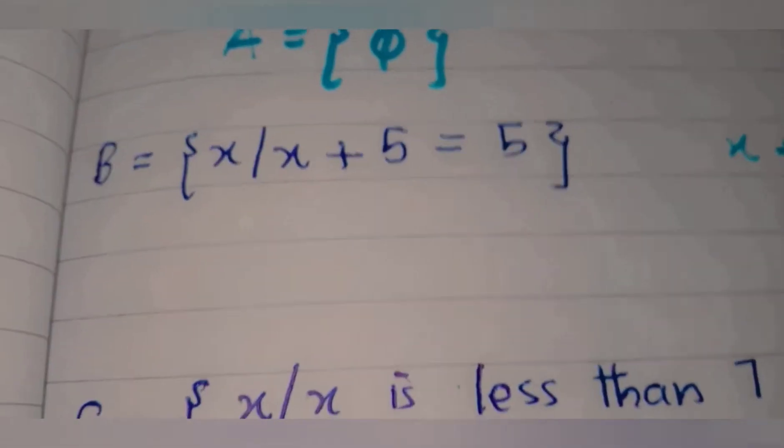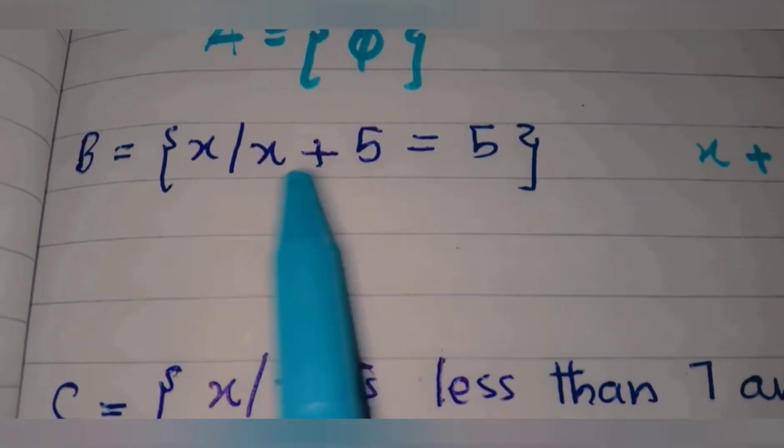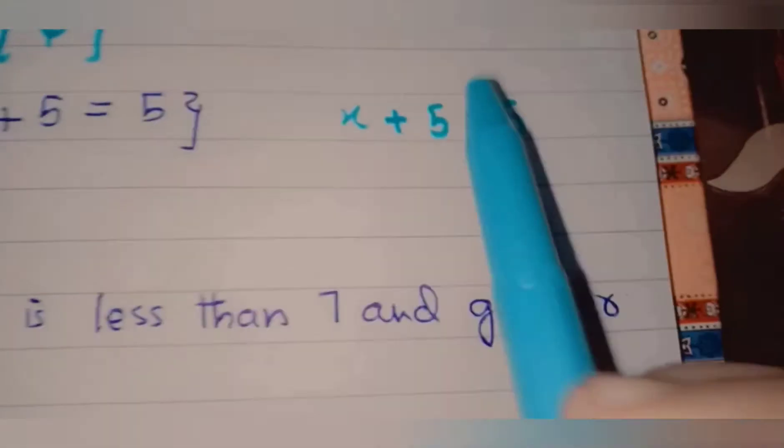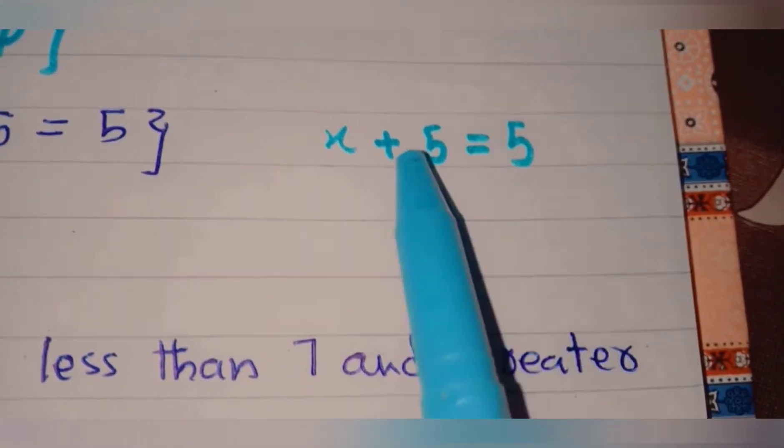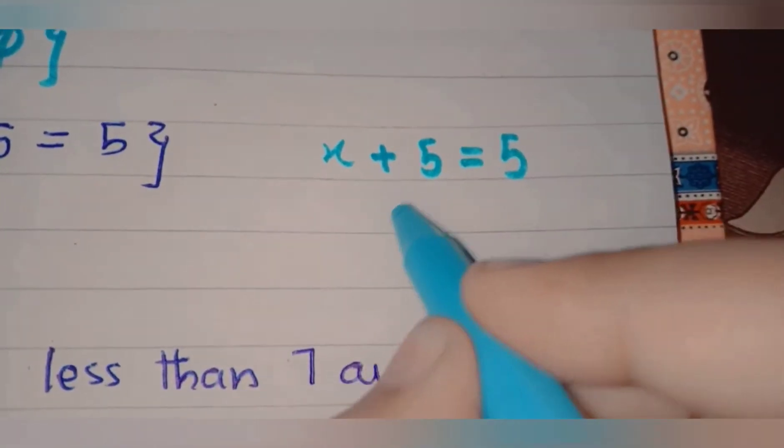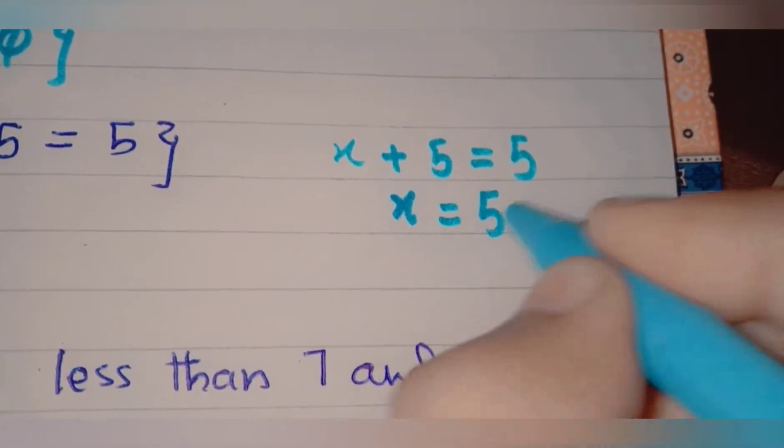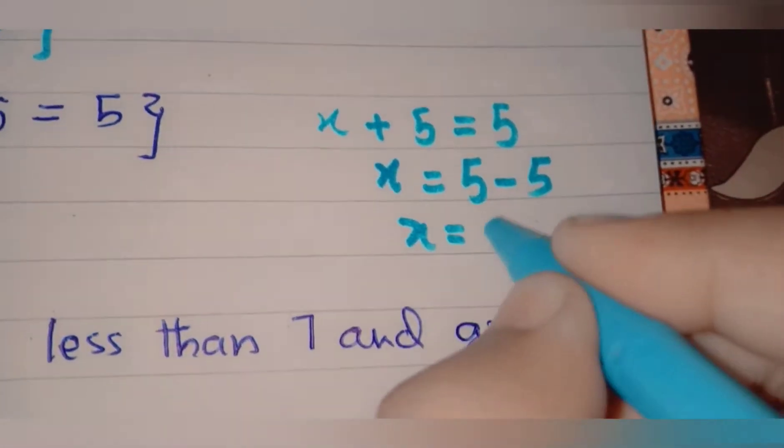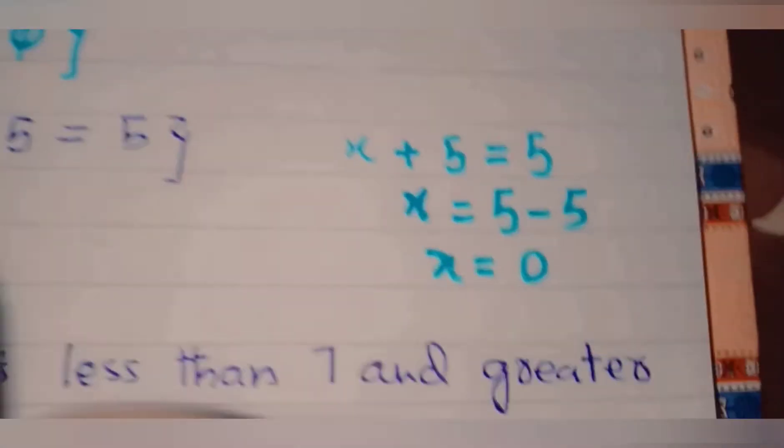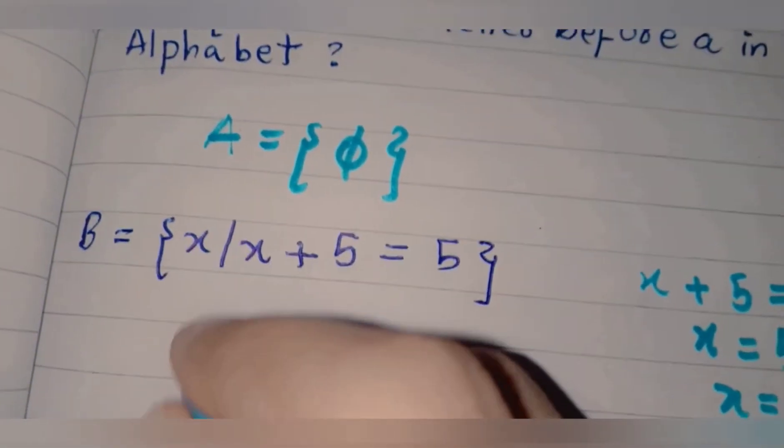Question number two, part B: B equals the set x such that x plus 5 equals 5. Let's solve this question. x plus 5 equals 5. Moving 5 to the other side: x equals 5 minus 5, x equals 0. This is not a null set because it has one element, which is 0.